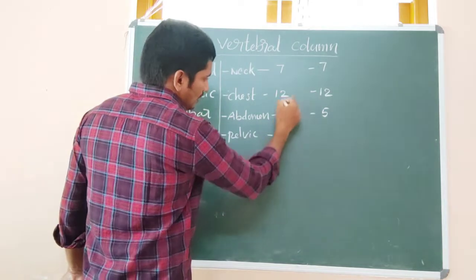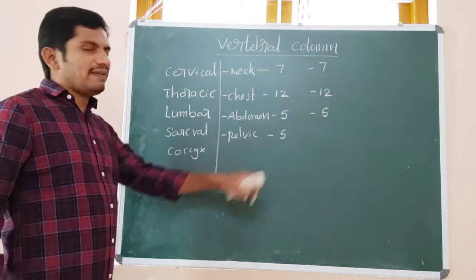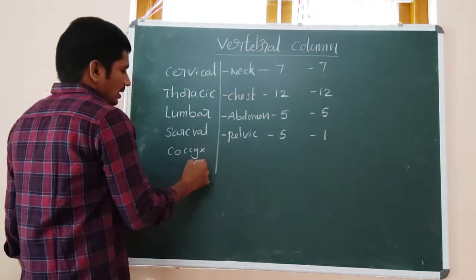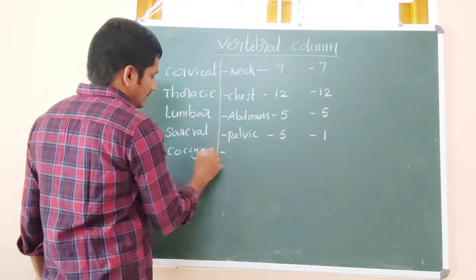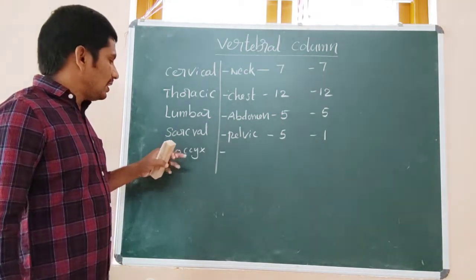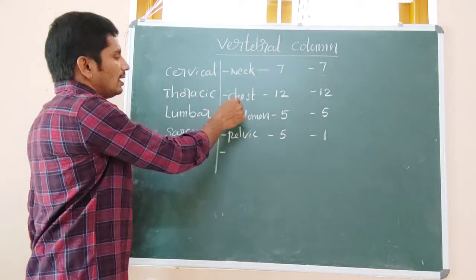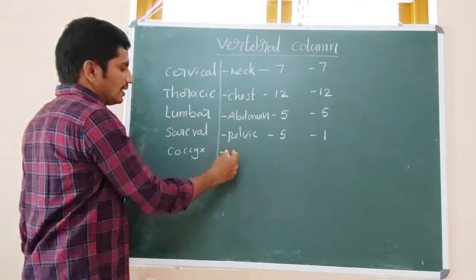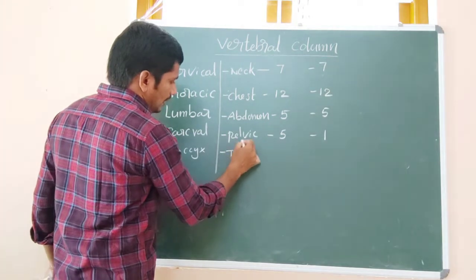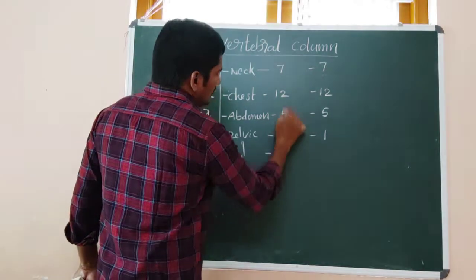The sacral vertebrae number five in infants, whereas in adults they are fused into one. The last region is the tail region, simply called the coccyx, located at the end after the pelvic region.